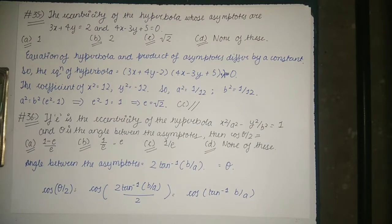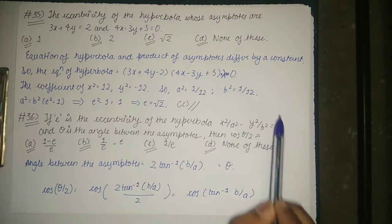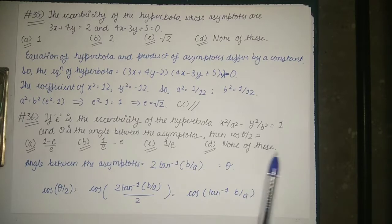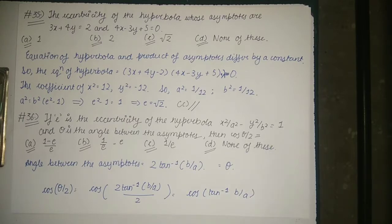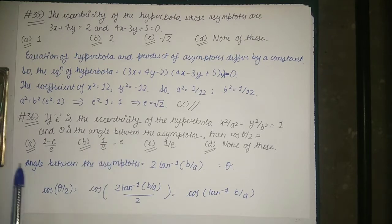Now let's focus on the next question. If e is the eccentricity of the hyperbola x²/a² - y²/b² = 1 and θ is the angle between the asymptotes, then the value of cos(θ/2) can be given by: option A) (1 - e)/e, option B) 1/e - e, option C) 1/e, and option D) none of these.